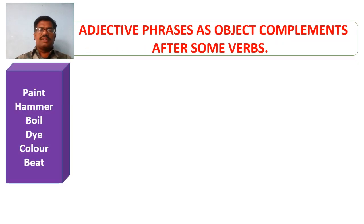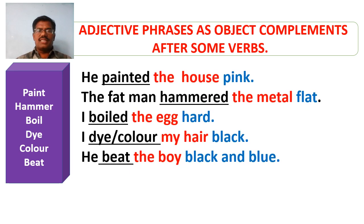Here is one more list of verbs with which there is a possibility of using adjective phrases as object complements. The verbs are used in sentences, underlined; objects are marked in red ink and adjective phrases used as object complements are marked in blue ink. The object complements include: pink, flat, hard, black, and black and blue.